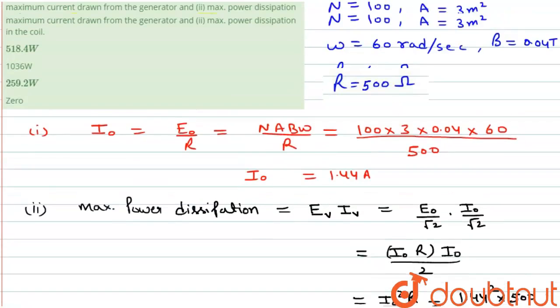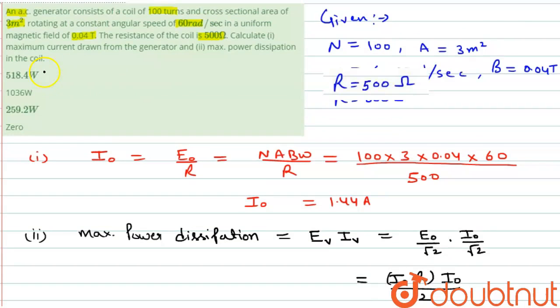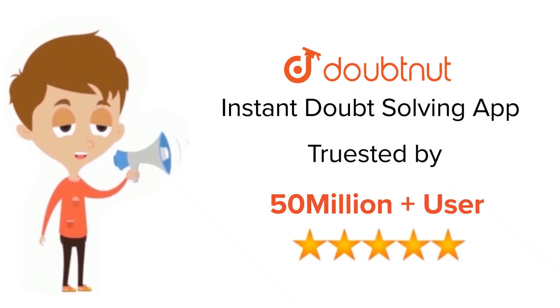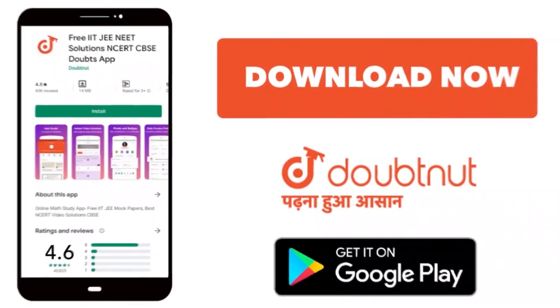So the answer of this question is option A. Thank you students. For class 6 to 12, IIT-JEE and NEET level, trusted by more than 5 crore students. Download Doubtnut app today.